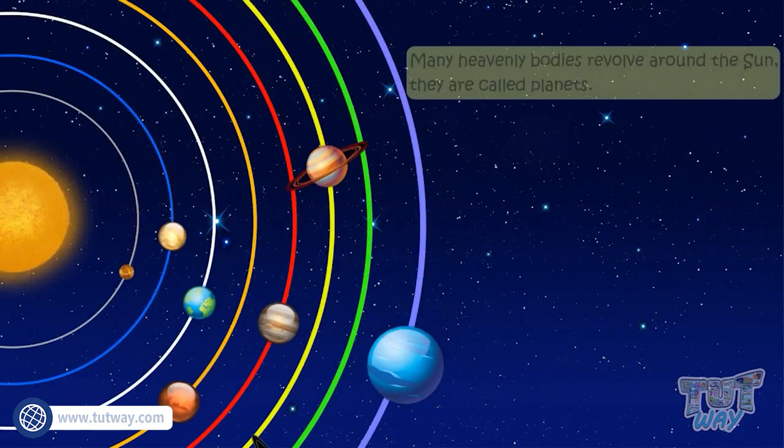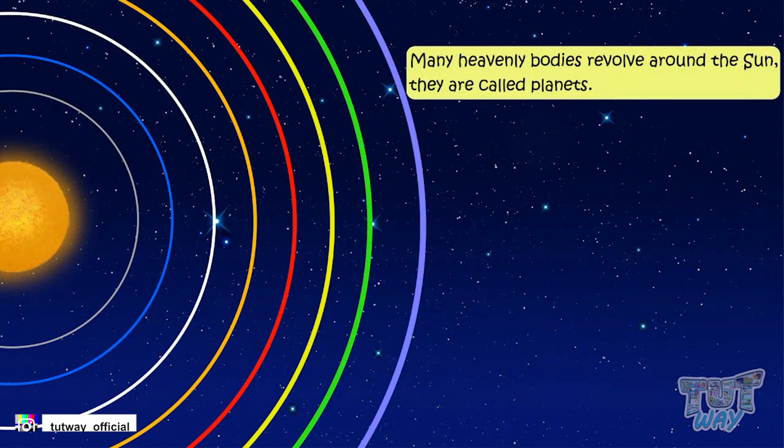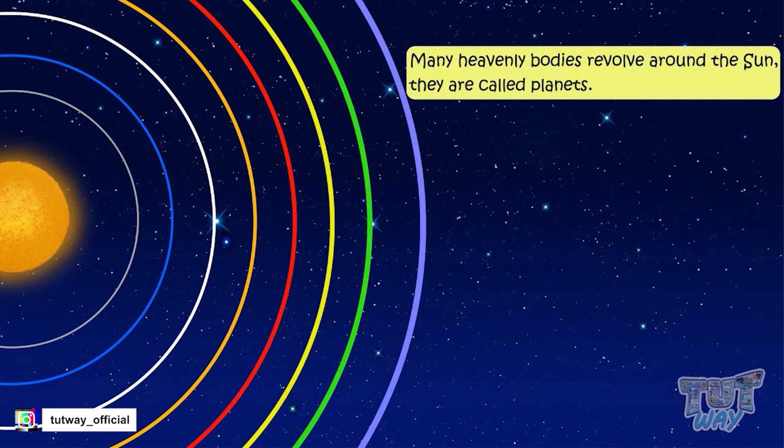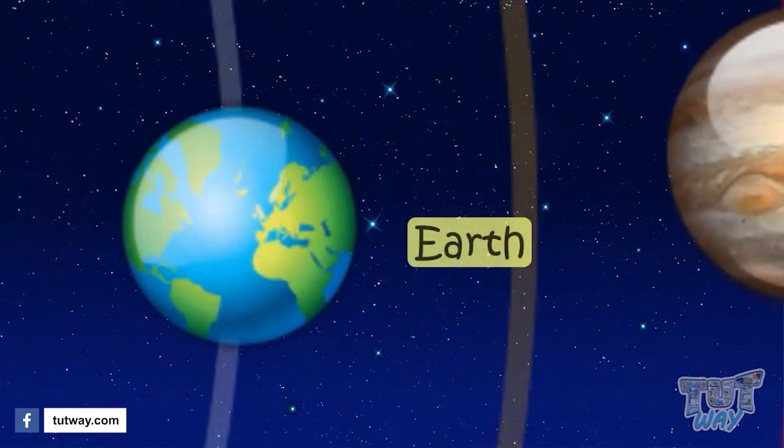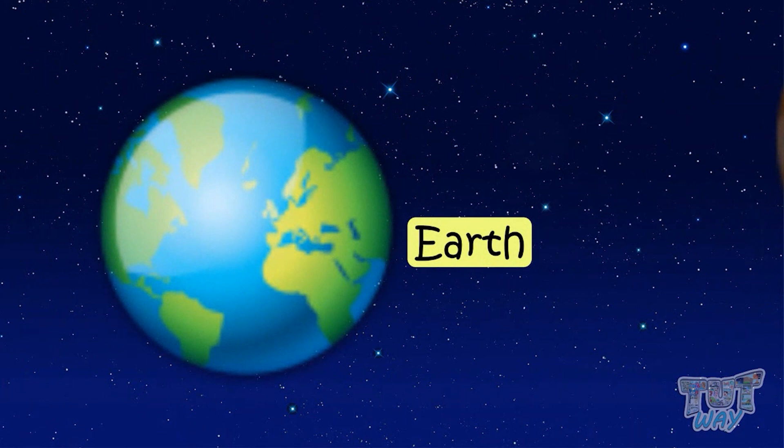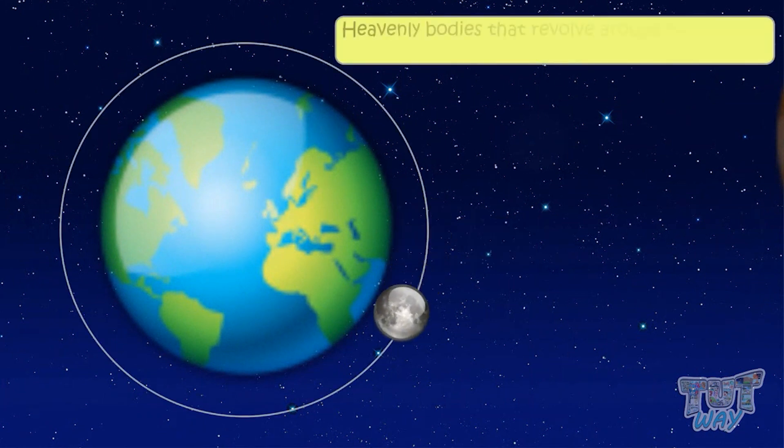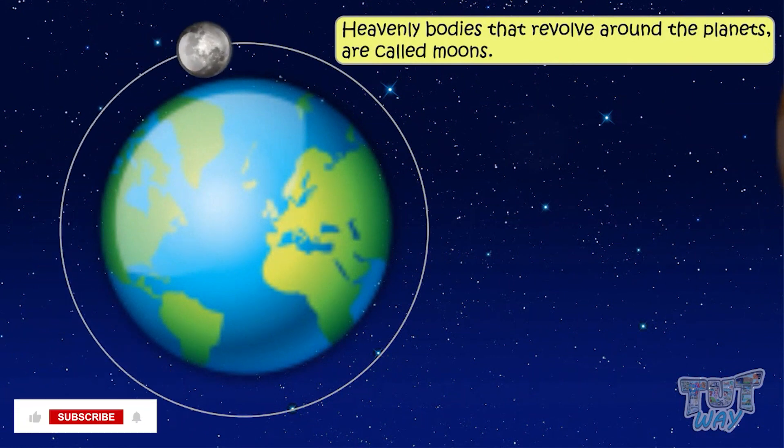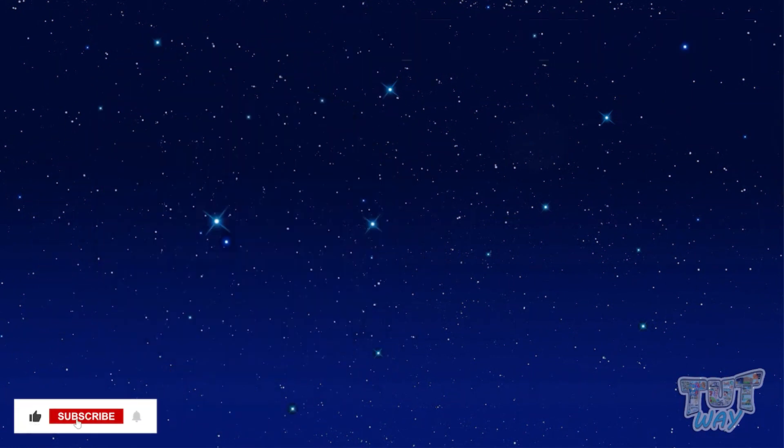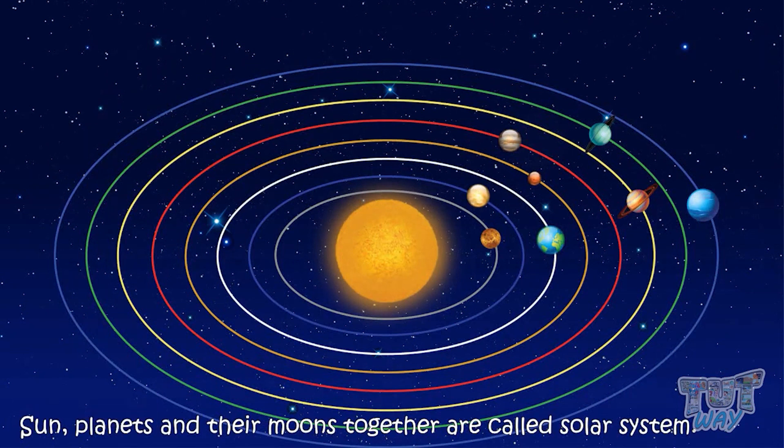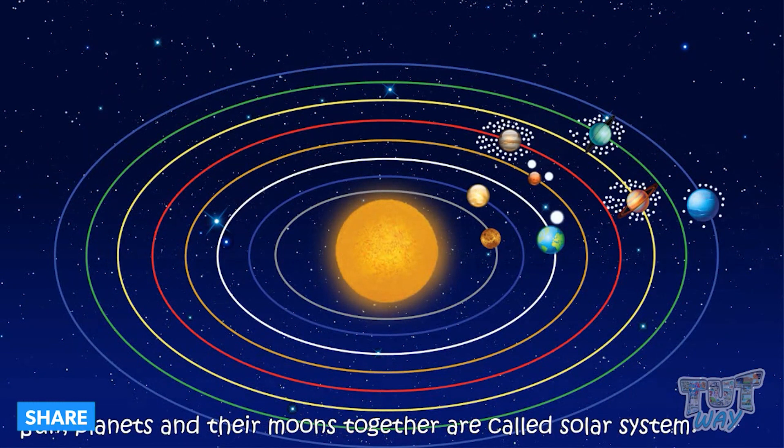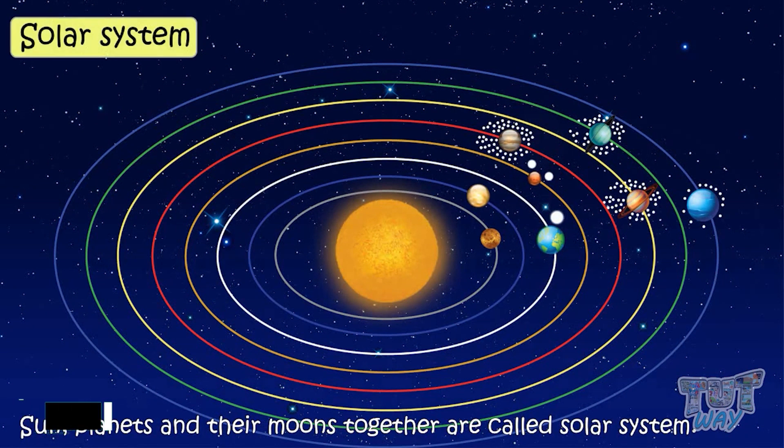Many heavenly bodies revolve around the Sun and they are called planets. Our Earth is one of those planets. Also some heavenly bodies revolve around the planets and they are called moons. Sun, planets and their moons together are called solar system.